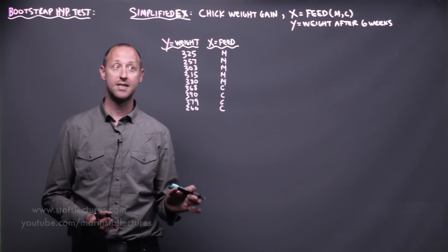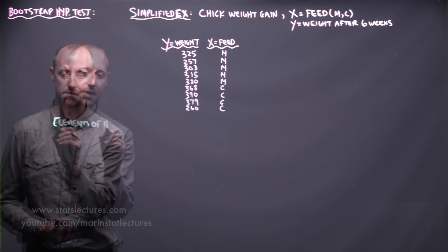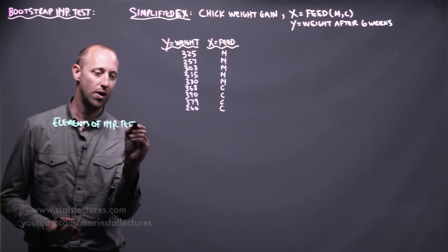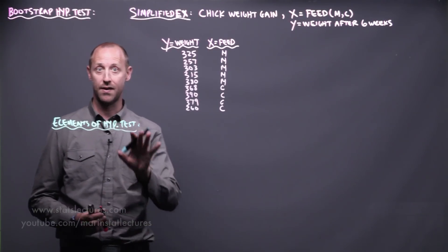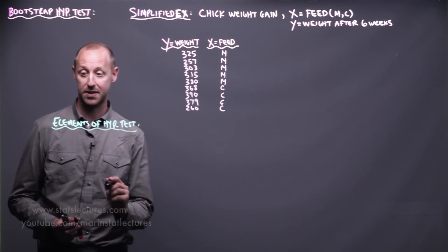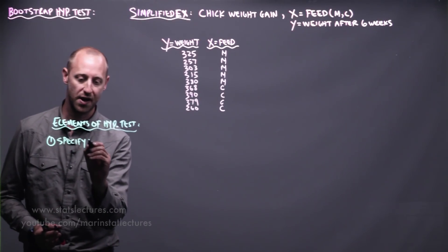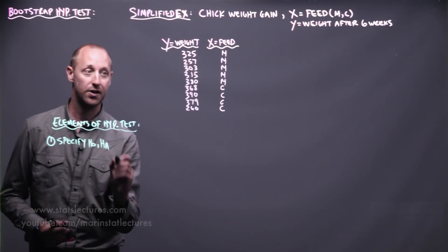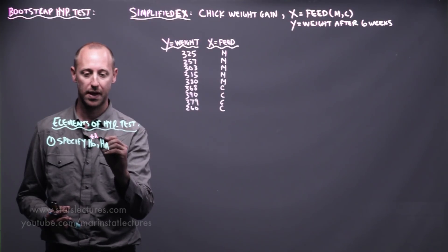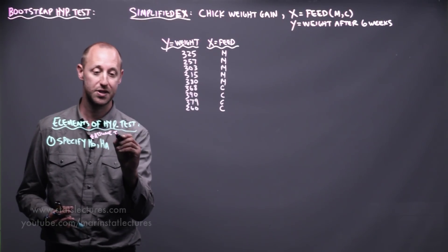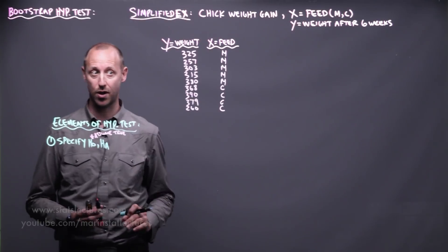The first thing to recall is the basic elements of a hypothesis test. While some of the mechanics change — whether we use parametric, non-parametric, or bootstrapping approaches — they generally all have the same elements. The first is to specify a null hypothesis and an alternative hypothesis. A reminder that they generally work by assuming the null hypothesis to be true, and then we work out what we would expect to show up if the null is true.